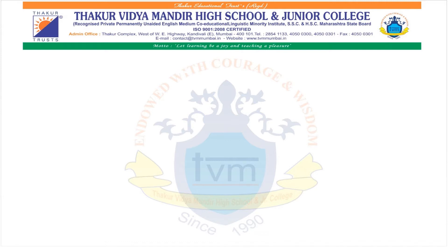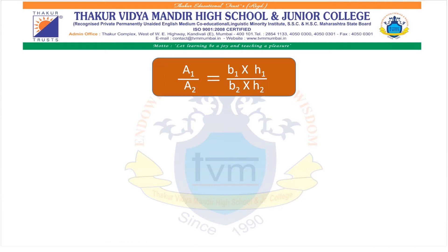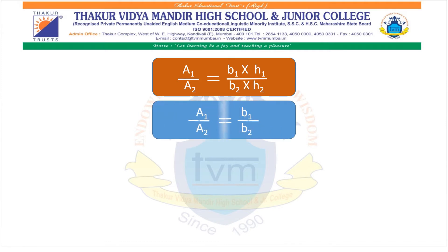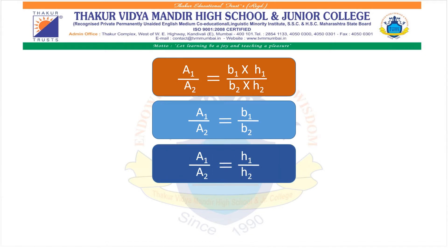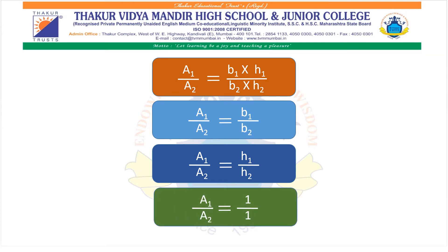These 4 ratios can be written as: A1 upon A2 equals B1 into H1 upon B2 into H2. If heights are equal, A1 upon A2 equals B1 upon B2. If bases are equal, A1 upon A2 equals H1 upon H2. And if both bases as well as heights are equal, A1 upon A2 equals 1 upon 1.